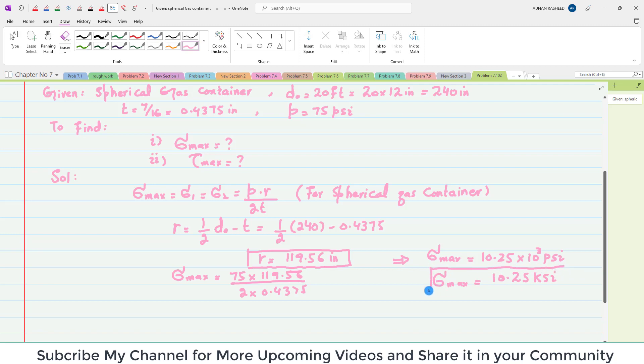You can also say that the maximum normal stress equals 10.25 ksi. This is the answer to our first part. Now we will find the second part.